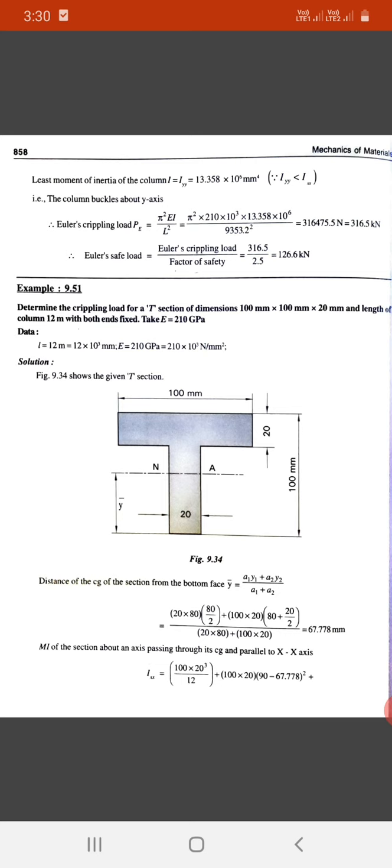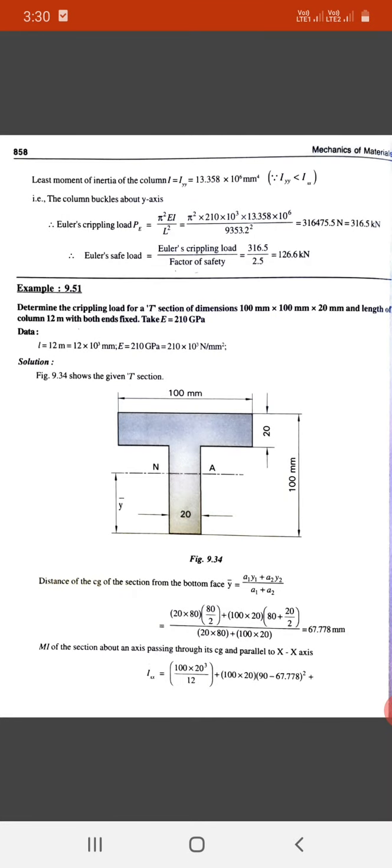This equals 316475.5 newtons, or 316.5 kilonewtons. Therefore, the safe load equals crippling load upon factor of safety, that is 316.5 upon 2.5, which equals 126.6 kilonewtons.